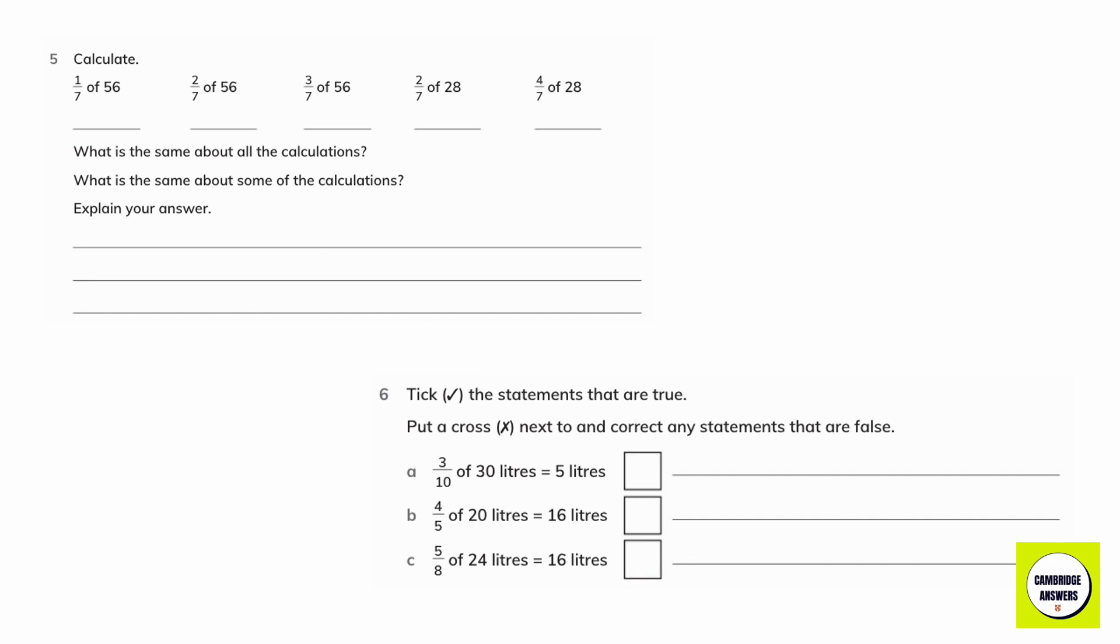Calculate. 1 seventh of 56 is 8, 2 sevenths of 56 is 16, 3 sevenths of 56 is 24, 2 sevenths of 28 is 8, 4 sevenths of 28 is 16.